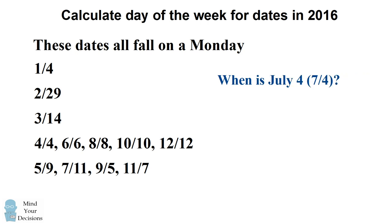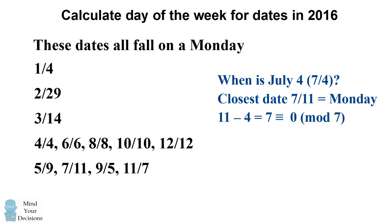Let's do another example. Which day of the week will July 4th be on? Our closest reference point will be 7-11, which is a Monday. Now July 4th is one week before that, so our offset will be zero. That means July 4th will also be on a Monday.